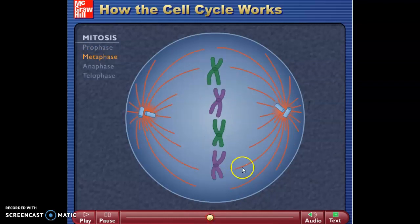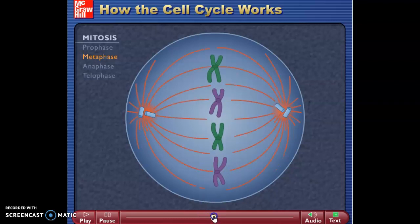Metaphase, all of the spindle fibers will attach to that special part of the centromere we call the kinetochore. And once they do, so again we can see metaphase, all the chromosomes lined up down the middle, or equator.